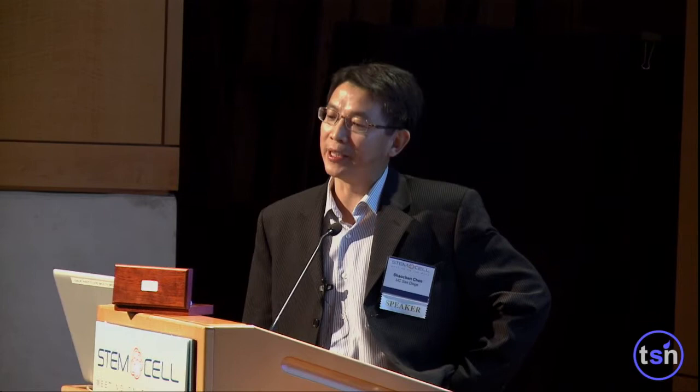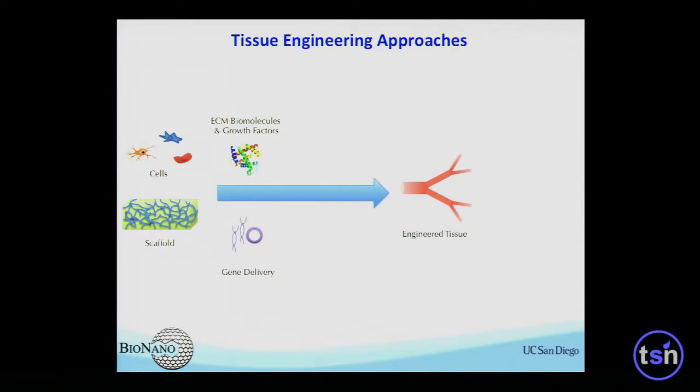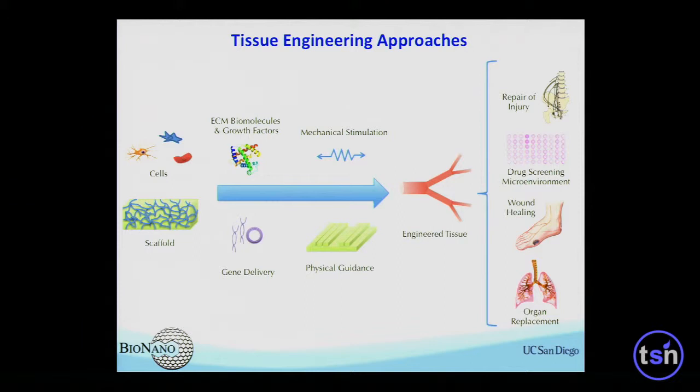Thanks for the great talk about tissue engineering — we are working on similar approaches. Tissue engineering is to organize cells in a way that's supported by three-dimensional scaffolds with controlled components like growth factors, small molecules, mechanical stimulation, and physical guidance. Those engineered tissues are used for organ repair, regeneration, and wound healing.